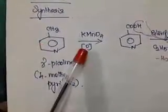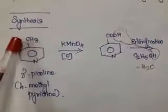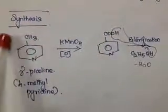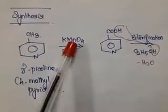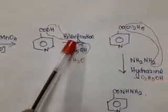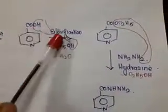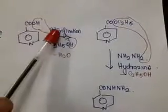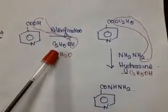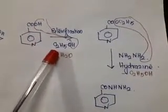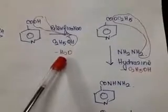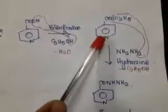Gamma picoline undergoes oxidation by means of KMnO4. The methyl group is oxidized and we get a carboxylic acid derivative. Then it undergoes esterification — formation of an ester from acid and alcohol. The alcohol used here is ethanol, and with elimination of one molecule of water we get the ethyl ester derivative.